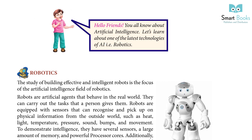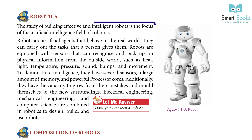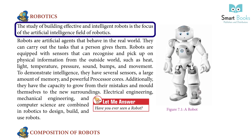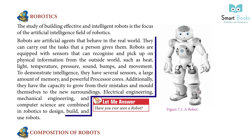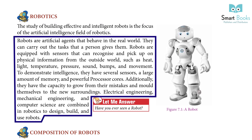In the same way, when a machine thinks and decides independently, it makes it artificially intelligent. Hello friends! You all know about artificial intelligence. Let's learn about one of the latest technologies of AI — Robotics. The study of building effective and intelligent robots is the focus of the artificial intelligence field of robotics. Robots are artificial agents that behave in the real world. They can carry out the tasks that a person gives them.